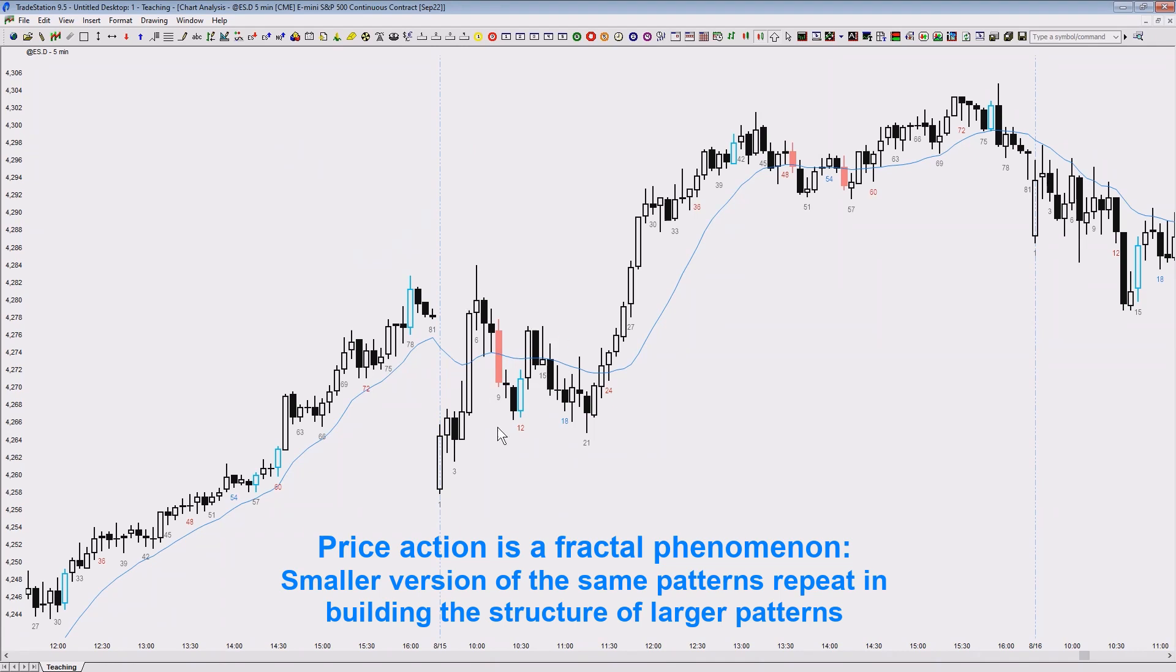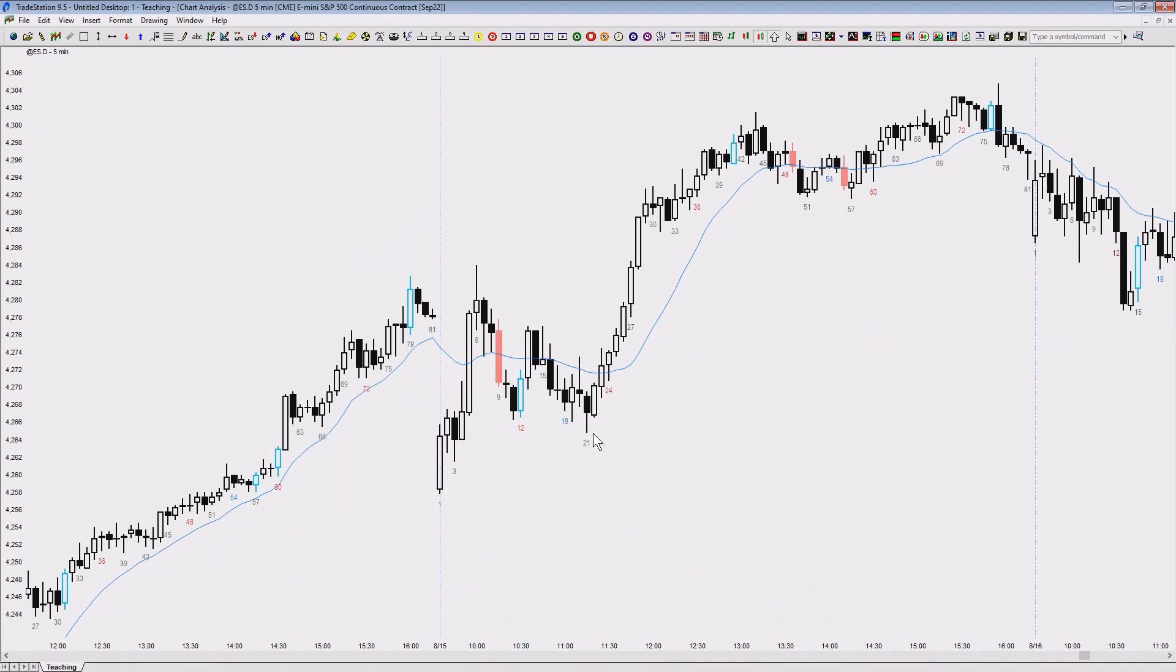But eventually, all of these are fractal components of a complex pullback which is two legs and it has three parts here and three or four parts here. And then the market starts to resume.